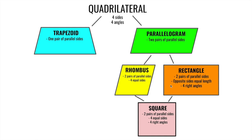As we go further, quadrilaterals get even more special. If there are two pairs of parallel sides and all four sides are the same length, we call it a rhombus. This side is parallel to that side, this side is parallel to that side, and all sides are equal — it's a rhombus.